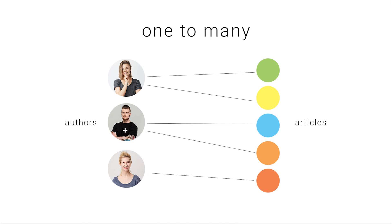Next, one-to-many. Let's imagine that one author has written more than one article — two, three, four, or even more articles. One-to-many post relation allows you to link one post from the author's post type, meaning one author, to multiple posts from the article's post type. But it doesn't allow you to link an article from the article's post type to multiple authors. One article in this case can only be linked to one author.